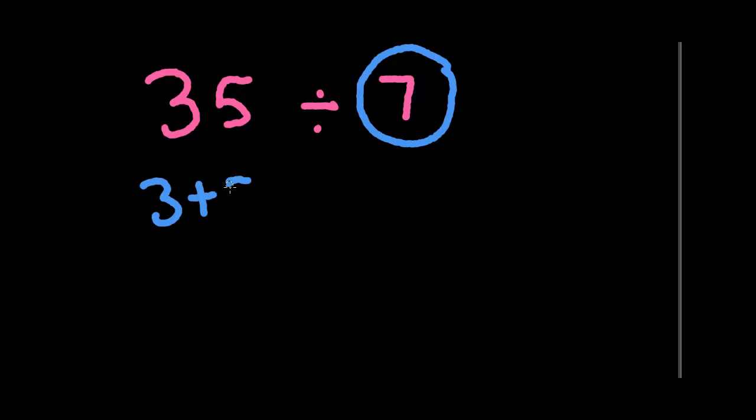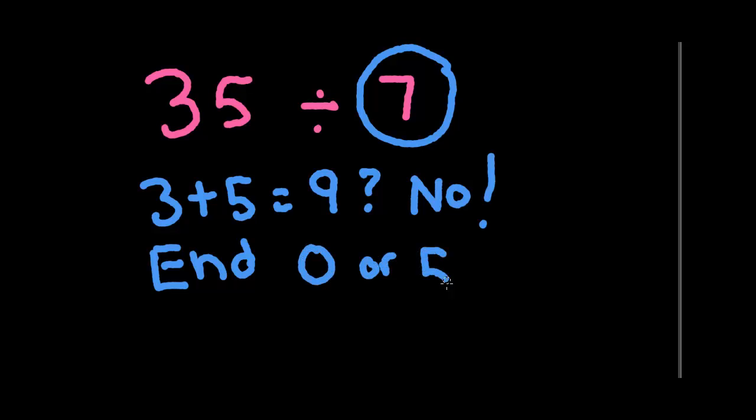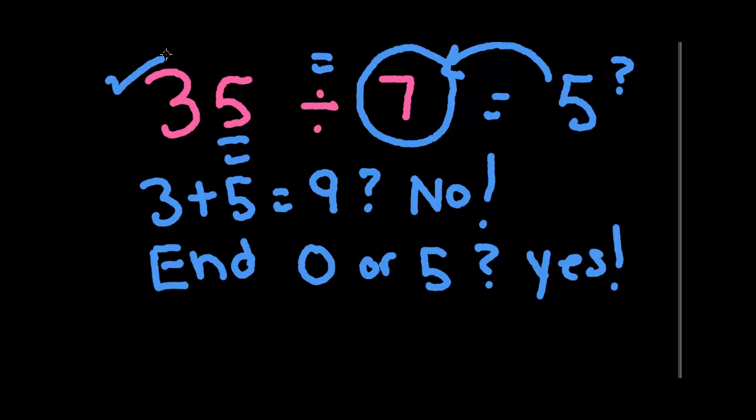But let's take 35 divided by 7. We don't have a divided by 7 rule, and this doesn't make a nice number pattern. There's no 5, 6, 7, 8 or anything like that that we see. So what are we going to do? We're going to look and say, does 3 plus 5 equal 9? No. The 9 trick doesn't work. So does it end in a 0 or a 5? Yes, it does. Therefore, one possible answer is it could be 5. And then I always check. 7 times 5 equals 35. Yes, it does.